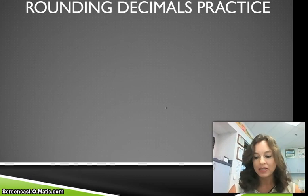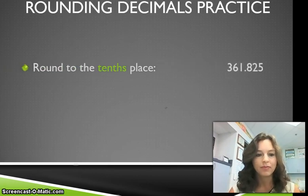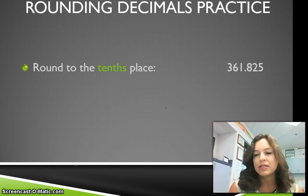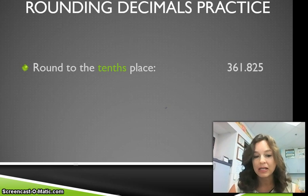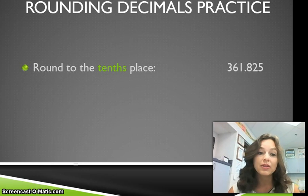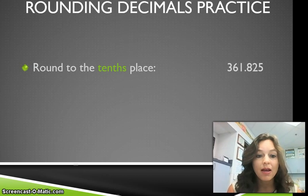Let's do some rounding decimal practice. Round to the tenths place — we have 361 and 825 thousandths. Find the number in the tenths place, look at the number next to it behind it. If the number behind the decimal we're rounding to is 4 or below, keep the decimal the same and everything behind it becomes zeros. If it's 5 or above, round the number up one space. Pause this and see if you can round this number to the tenths place, then check back with me.